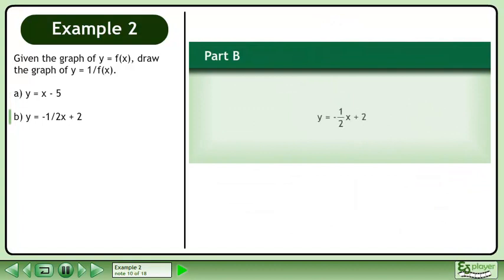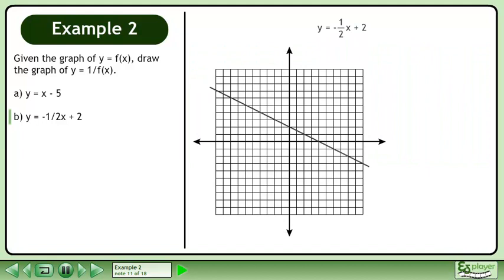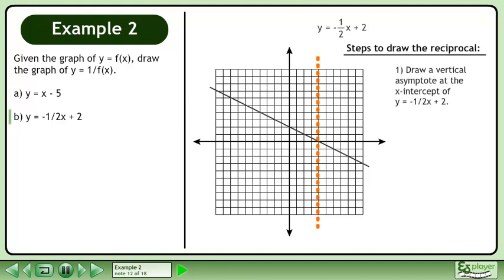In Part B we will graph the reciprocal of y equals negative 1 over 2x plus 2. Draw the graph of y equals negative 1 over 2x plus 2. First, draw a vertical asymptote at the x-intercept of y equals negative 1 over 2x plus 2.